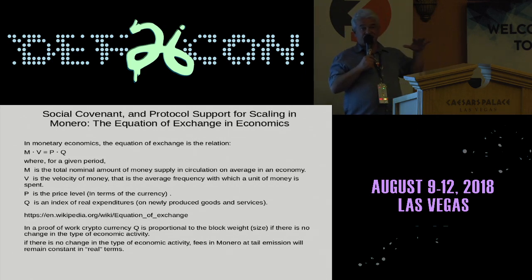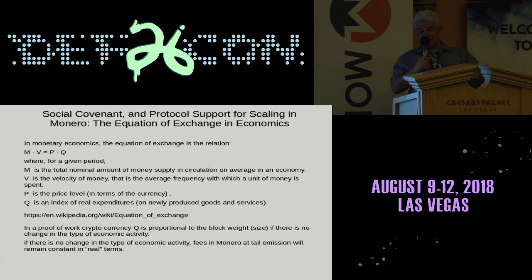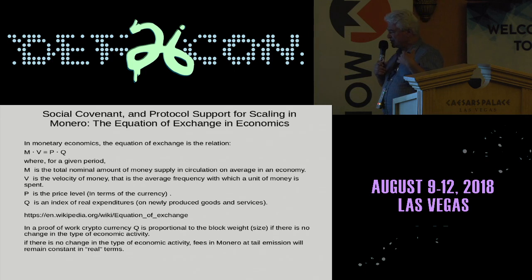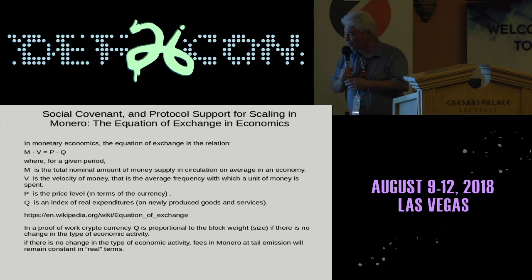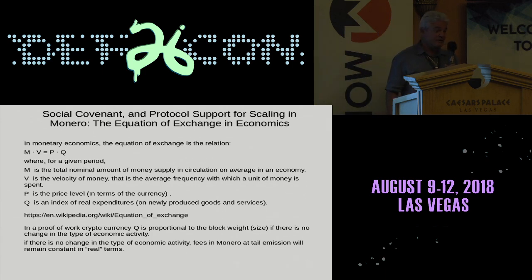Fees actually should remain constant once we get tail emission, in terms of actual purchasing power. Because if you double the size of the economy — thereby doubling the price — the fees in terms of Monero fall by half. So we have a very elegant solution where the fees in Monero will stay constant in real terms.